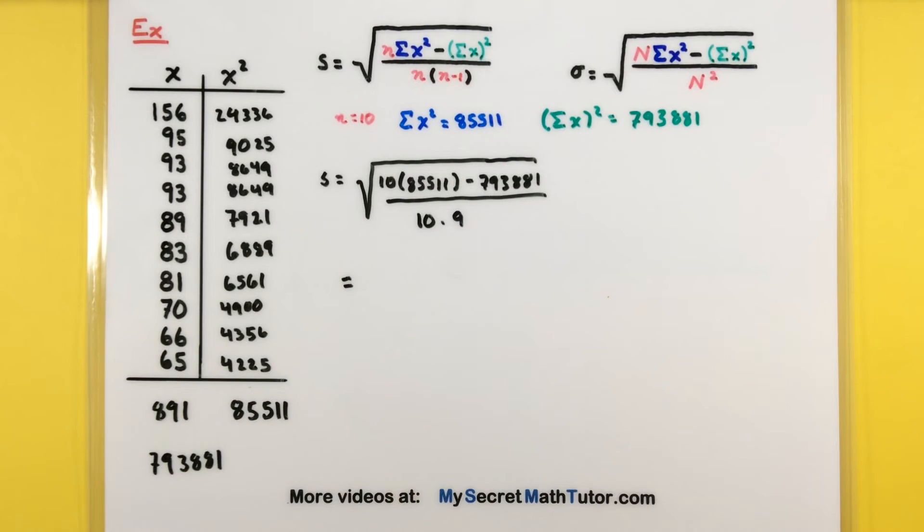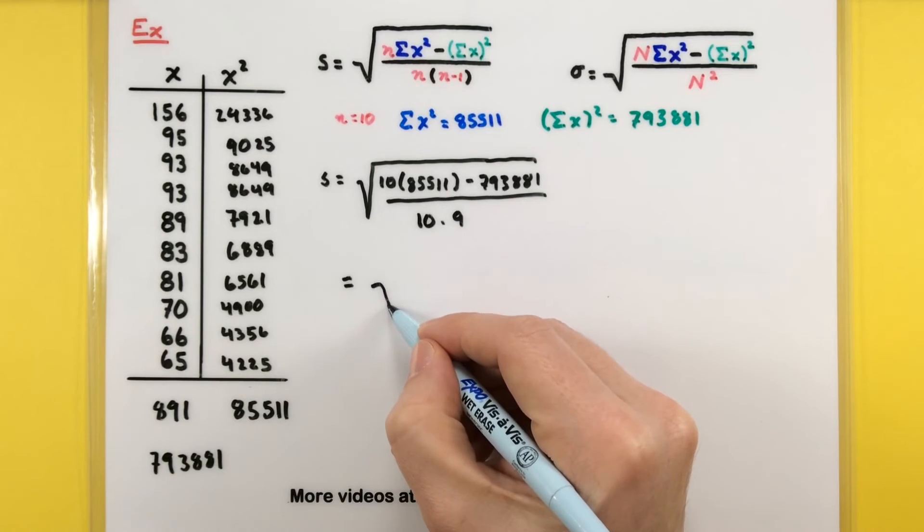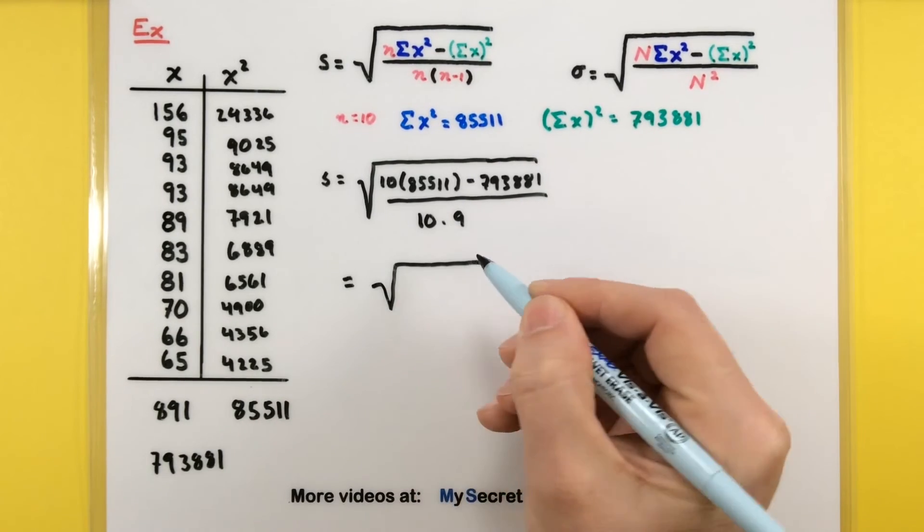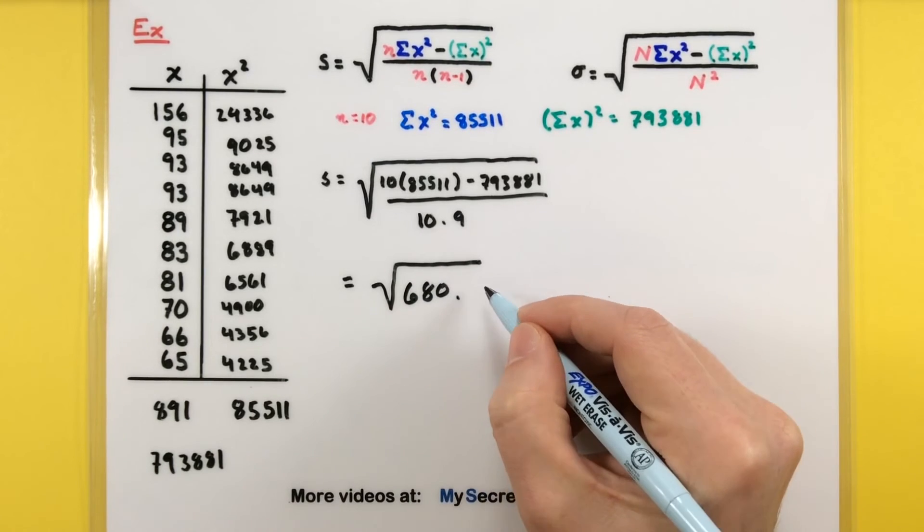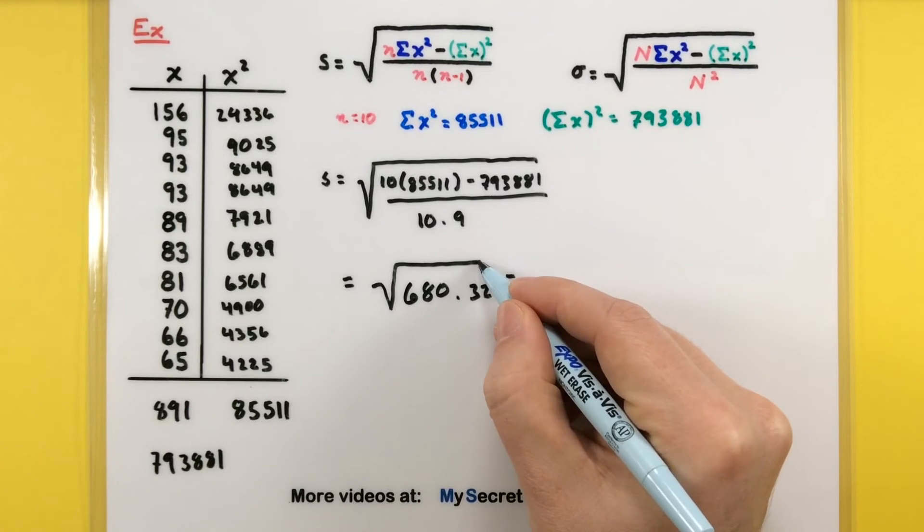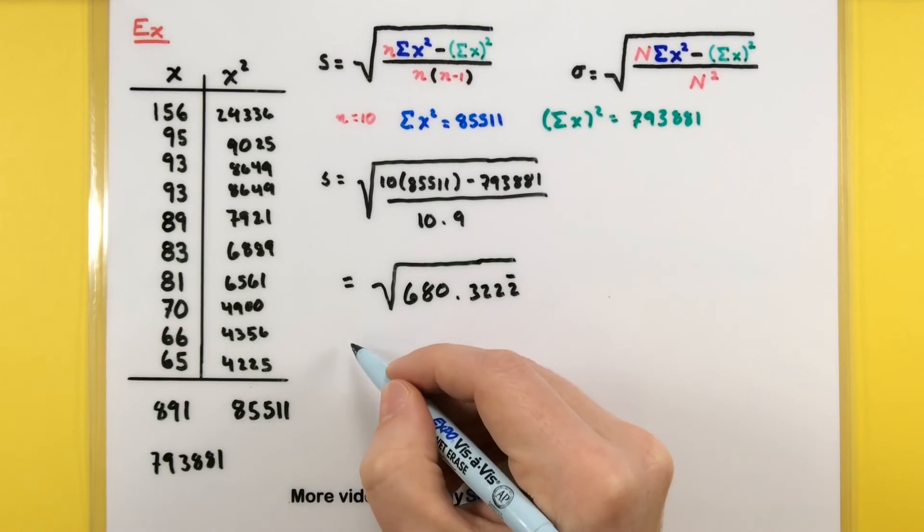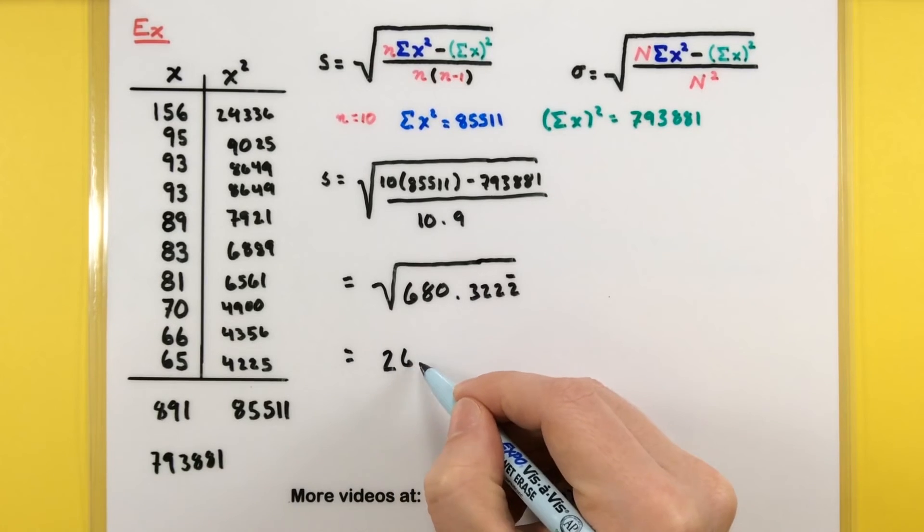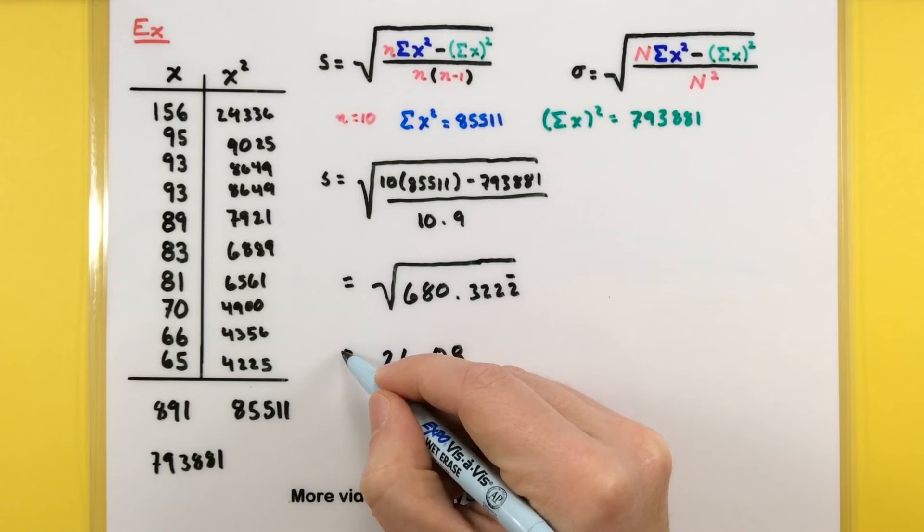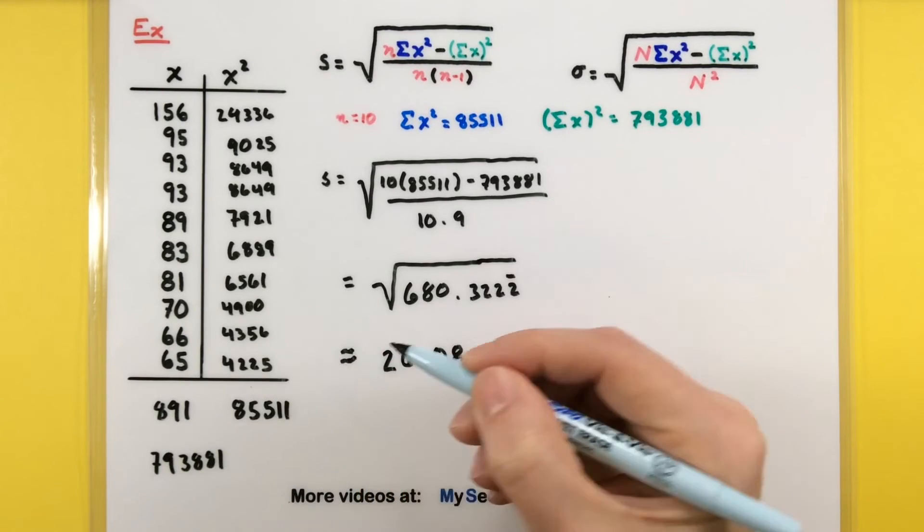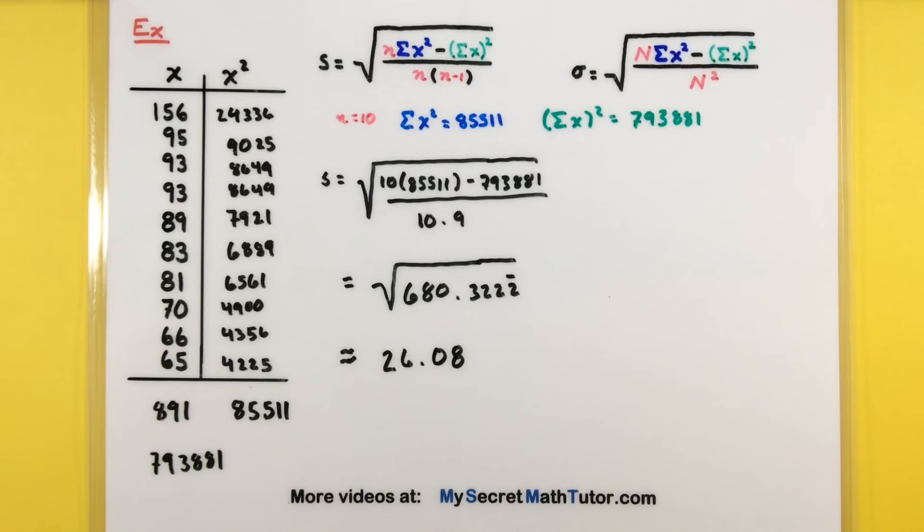Now, there is a lot of stuff in there, but it does simplify fairly nicely. Again, you might want to use a calculator to just take care of a lot of those calculations on the inside. In doing so, I get about 680.3222 and that 2 is repeating on the end. No worries. You can easily take the square root of that. This will give you 26.08 and some change. So, maybe we'll say this is approximate. Alright.